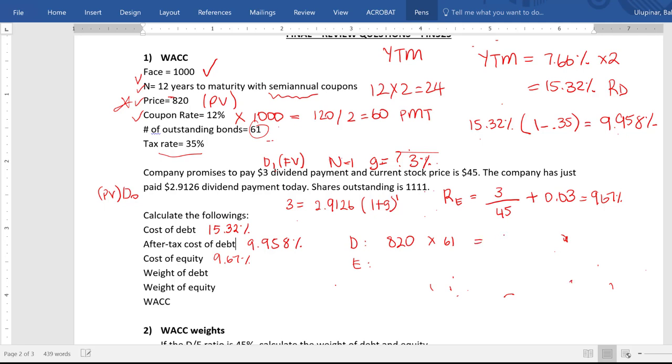So this means we raised $50,020 from bond holders. And the price of the stock is 45. And we have 1,111 shares outstanding. So we raised 49,995 from shareholders. The value of the firm is the sum of these two.